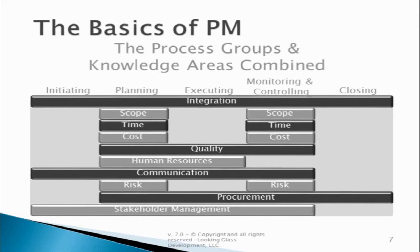Be very careful in reading this diagram — this is not a linear diagram denoting time. It is not arguing that the first thing on every project is initiating, then planning, executing, monitoring and controlling, and finally closing in a neat linear lock step. In fact, nothing could be further from the truth. Monitoring and controlling is an ongoing process that happens throughout the entire life of the project, and that means risk is also being managed throughout the entire life of the project — a very important notion.